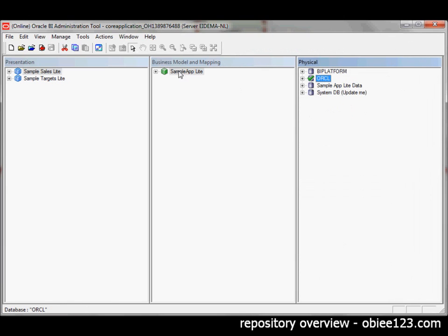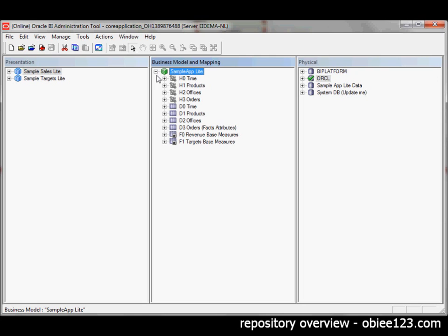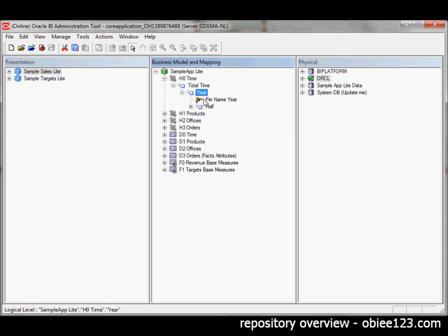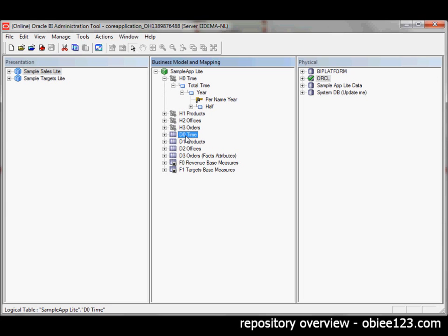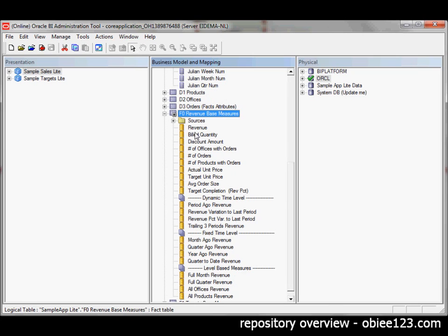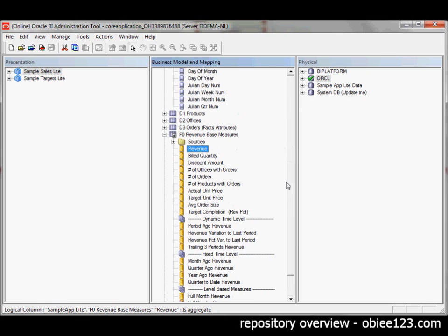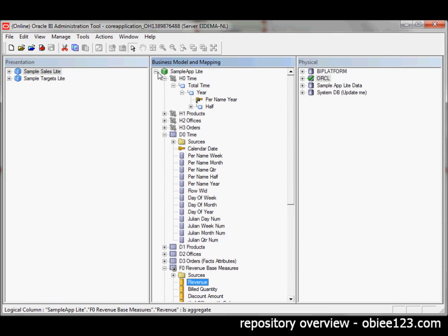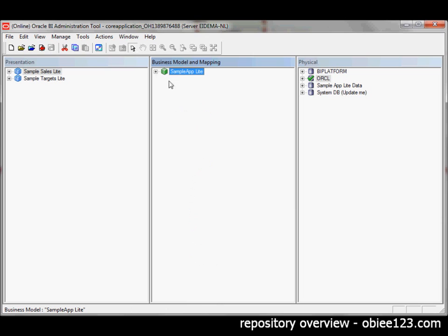The business model layer contains a dimensional model, so you will see the hierarchies that are available. Dimension objects and fact objects containing measures, as you can see by this icon. And as you can see, there's only one business model available here, and there are two subject areas available. So there are two different subsets of selections out of the business model in this repository.